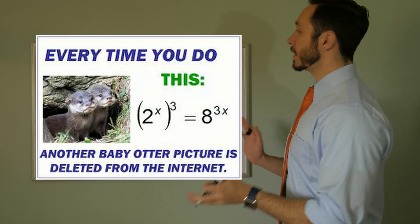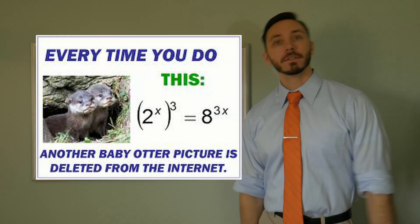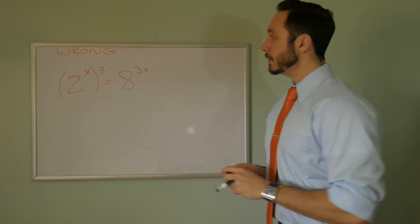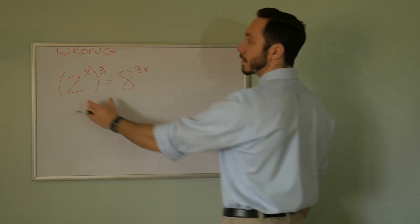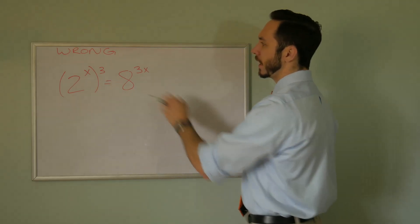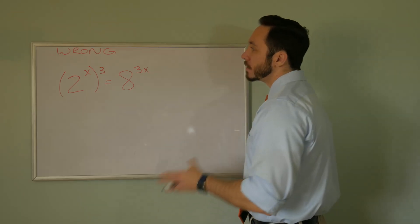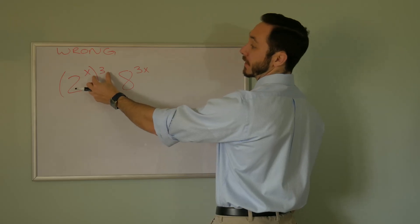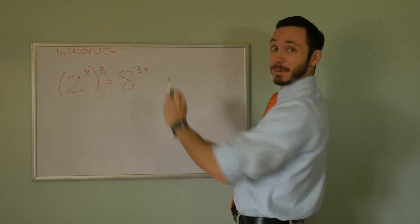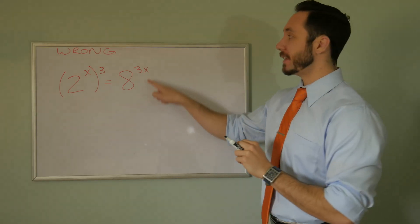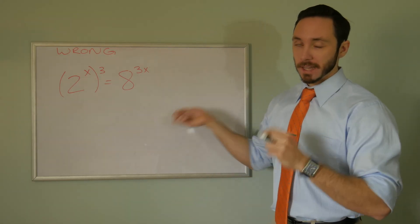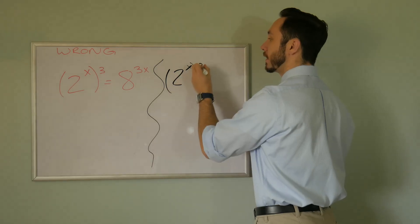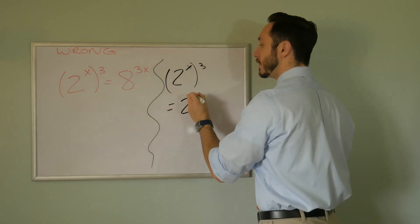The next one: every time you do this, another baby otter picture is deleted from the internet. We have two to the power of x, and that's to the third, equal to eight to the power of three x. What they did was kind of right — when you have a power and there's another power outside, we can take the product: x times three is three x. They applied it to the base and then kept it as three x — that's where they went wrong. You can say this is two to the three x.